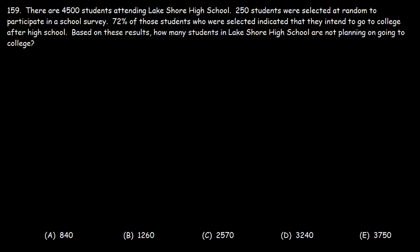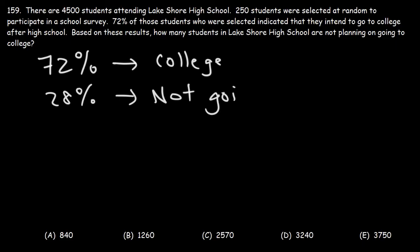Let's write down what we know. 72% of students who participated in the survey say that they want to go to college. That means that the other 28% are not planning on going to college. 100 minus 72 is 28.